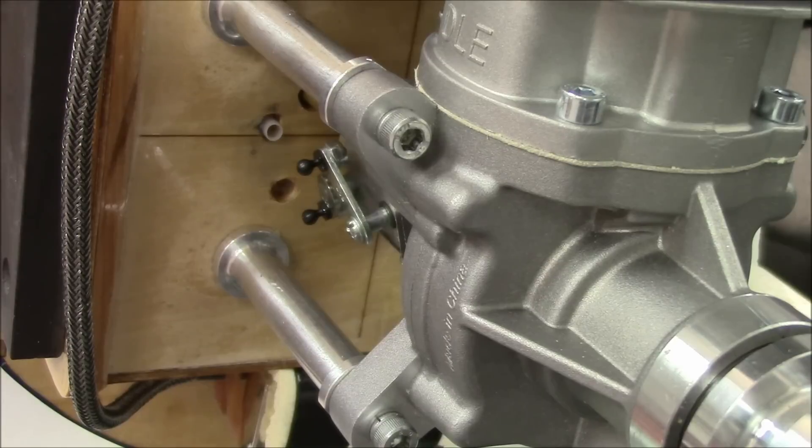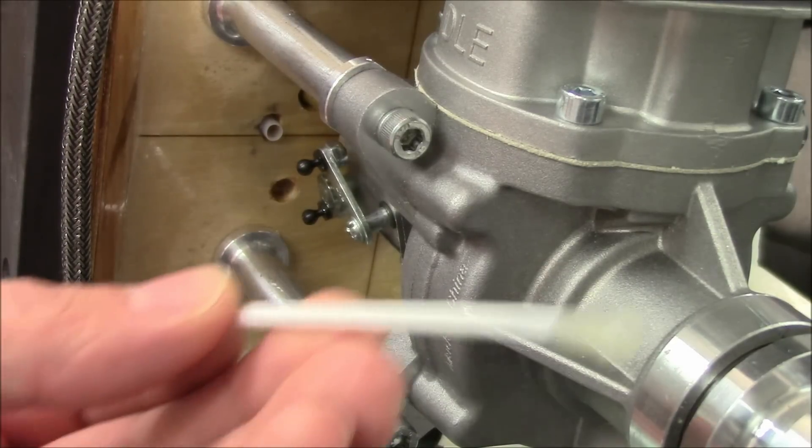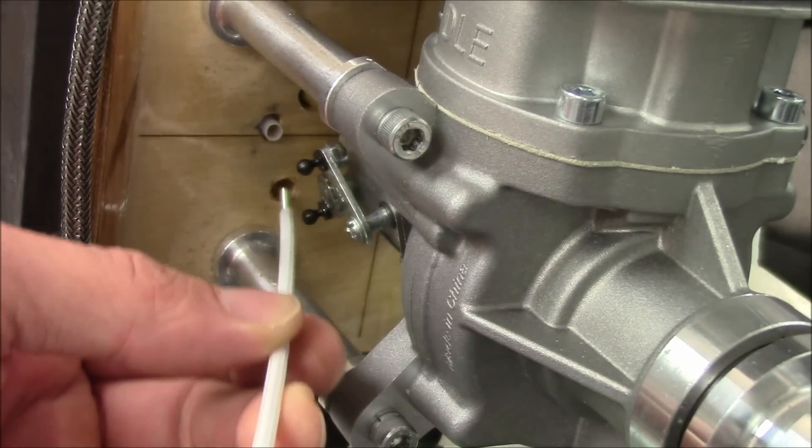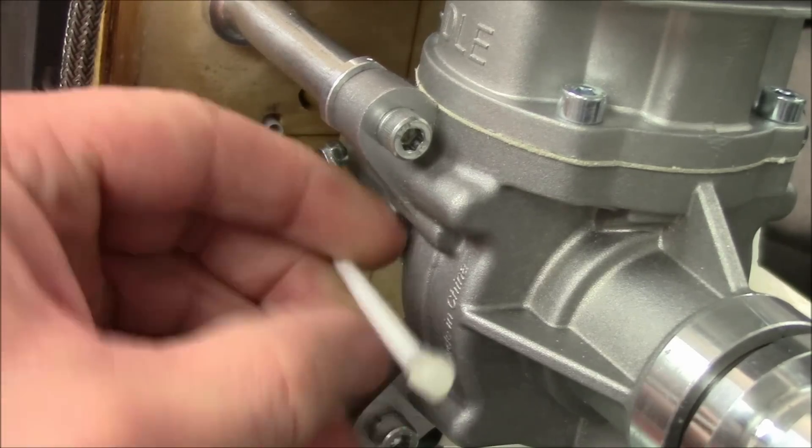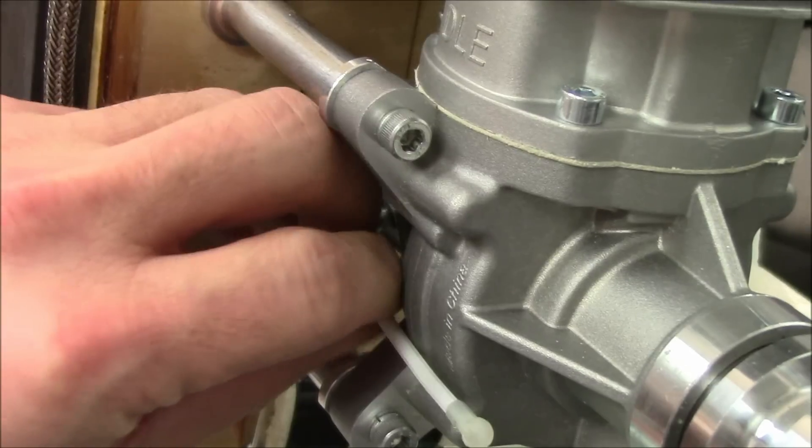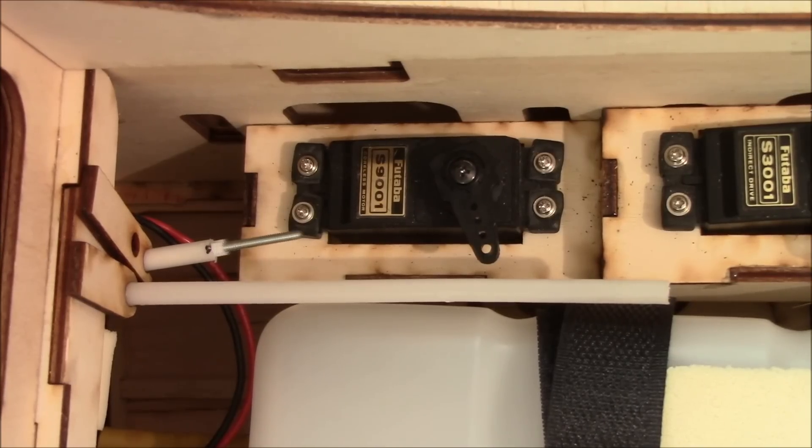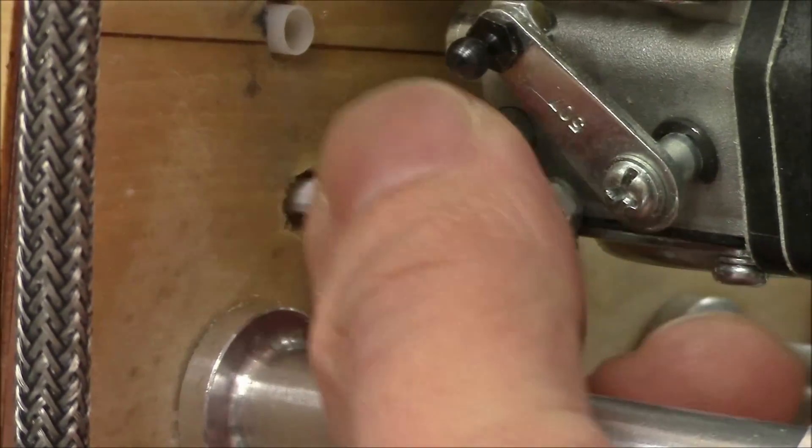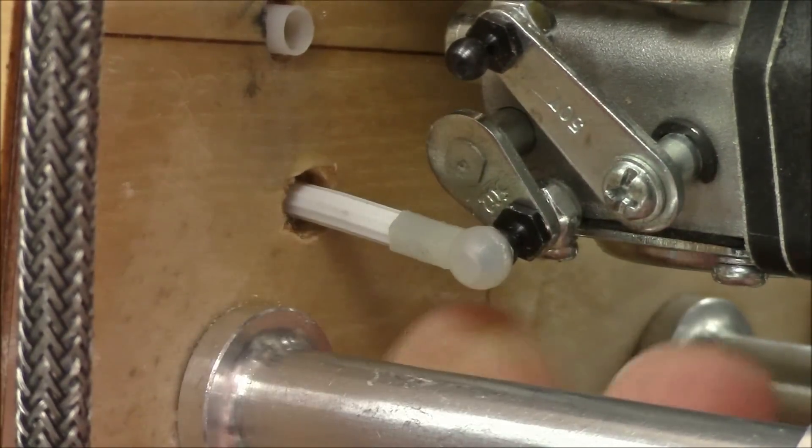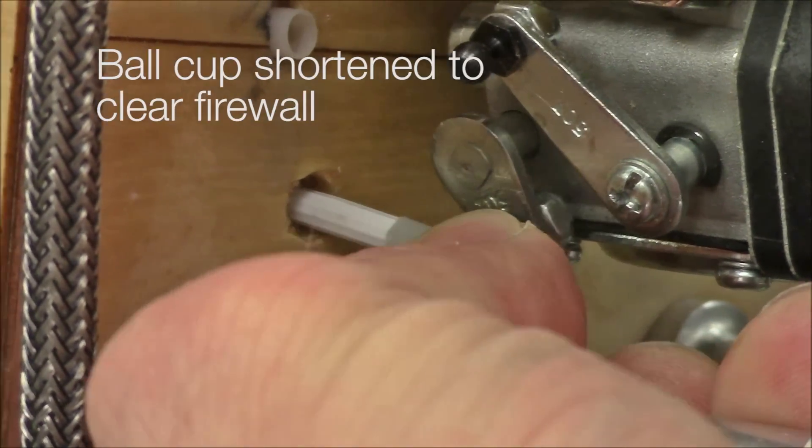I threaded a ball cup onto a threaded shaft and then into the inner push rod tube. The push rod fits through the hole in the firewall and into the outer push rod tube already installed. A little pressure will snap the ball cup onto the stud.